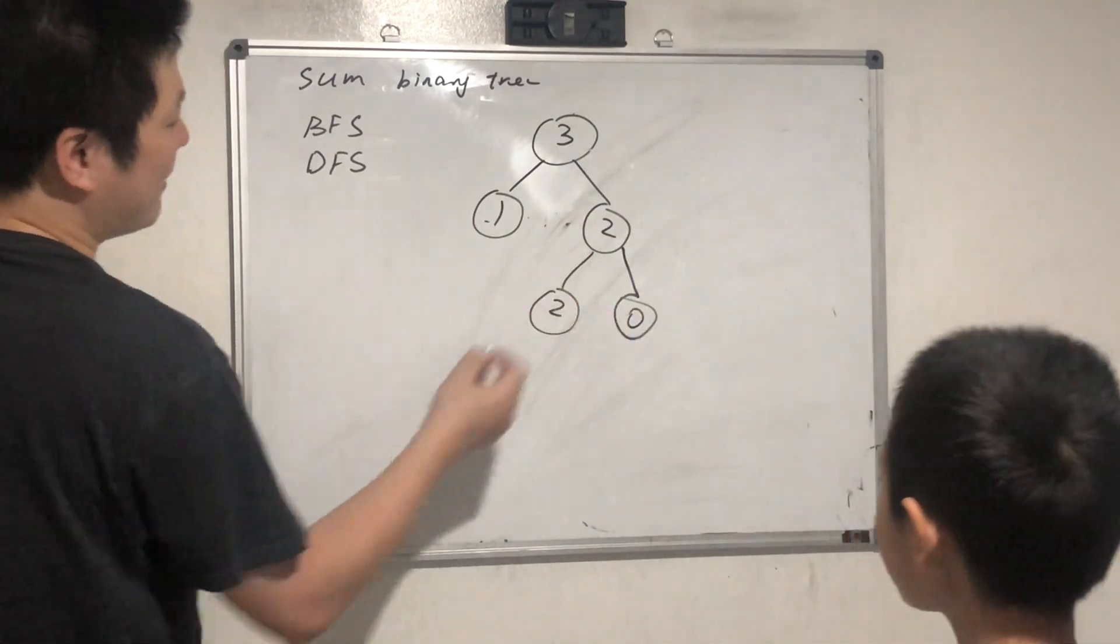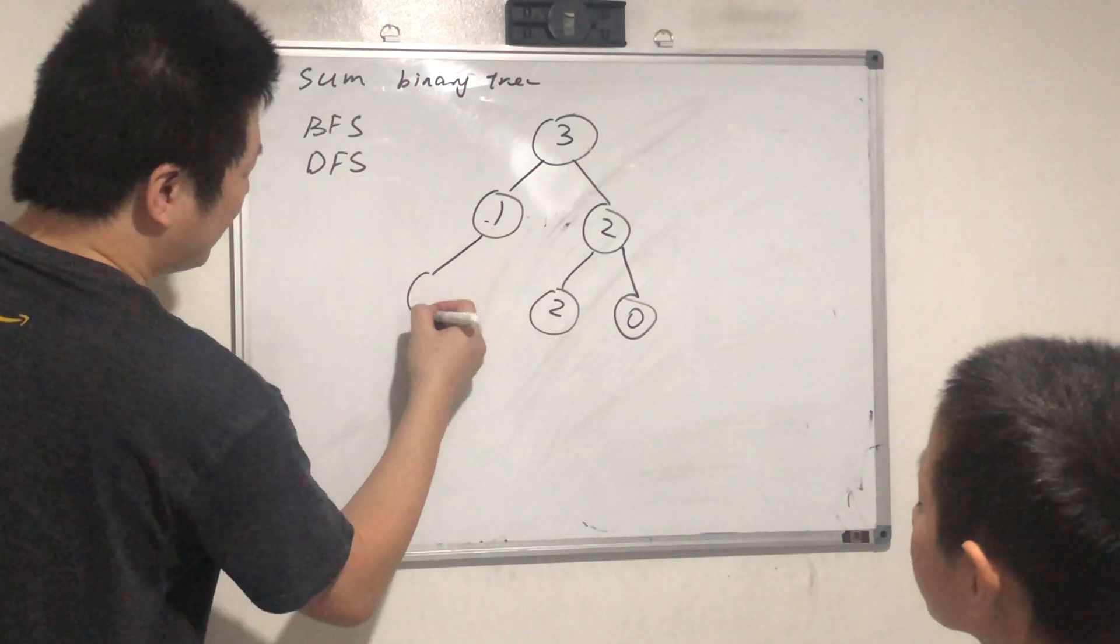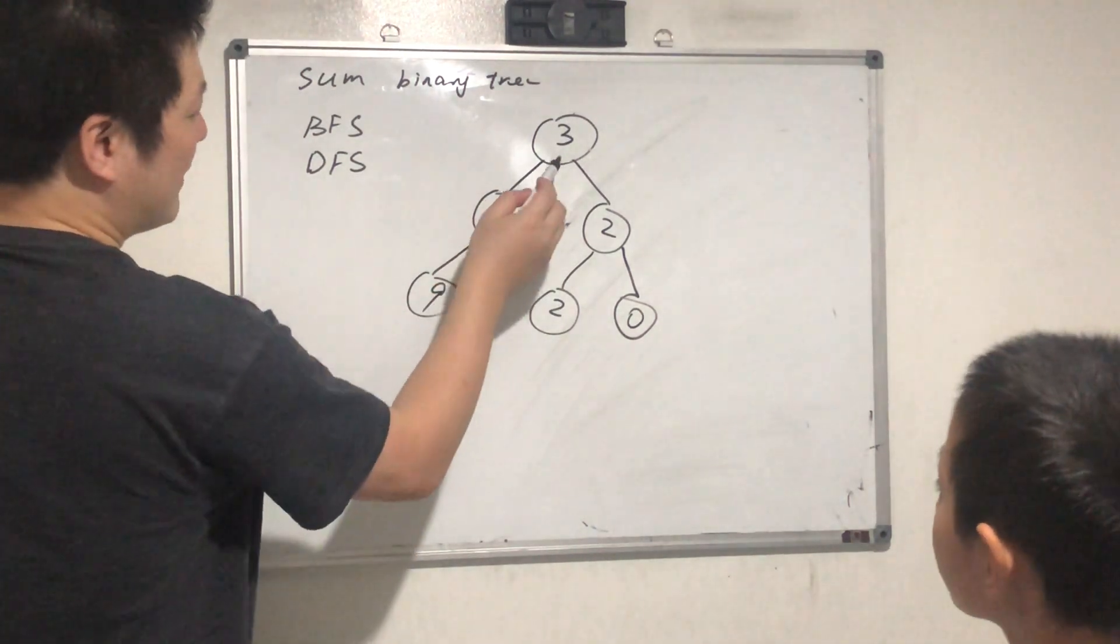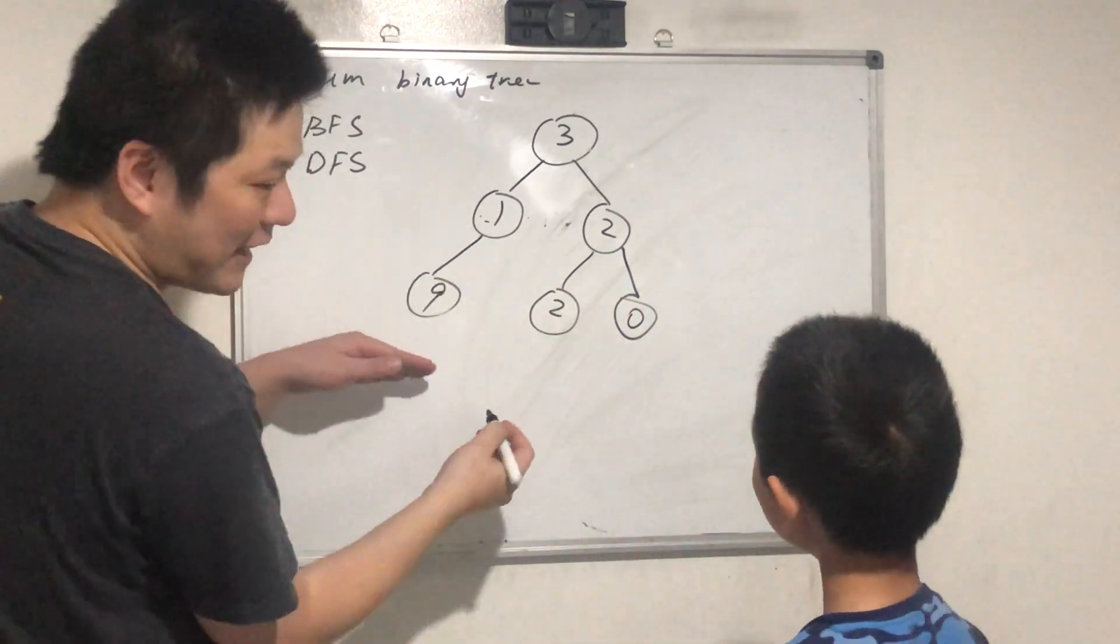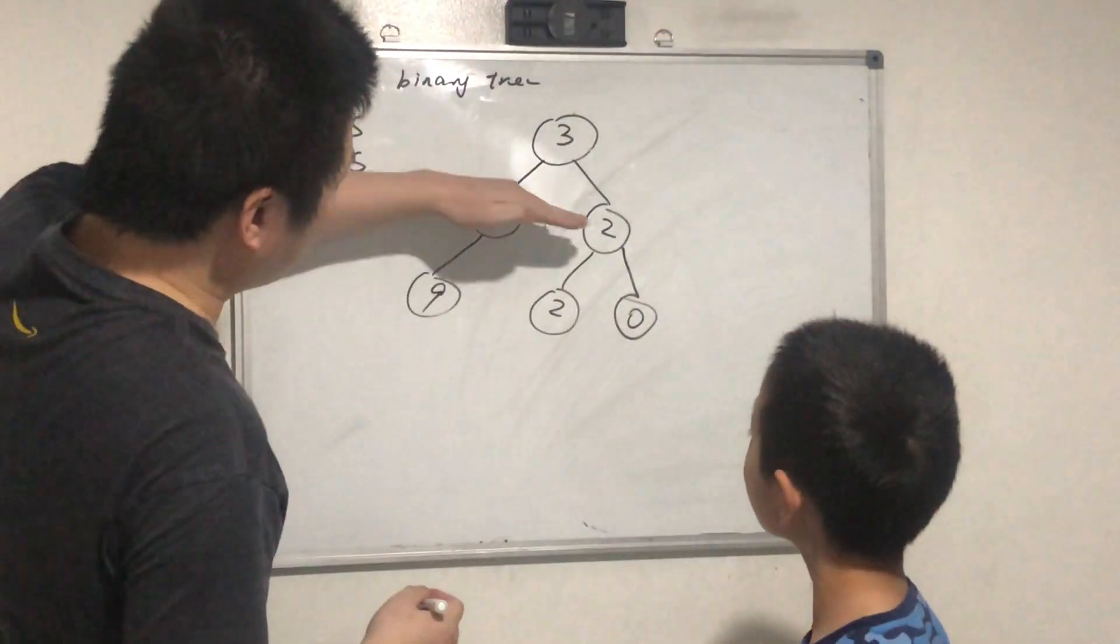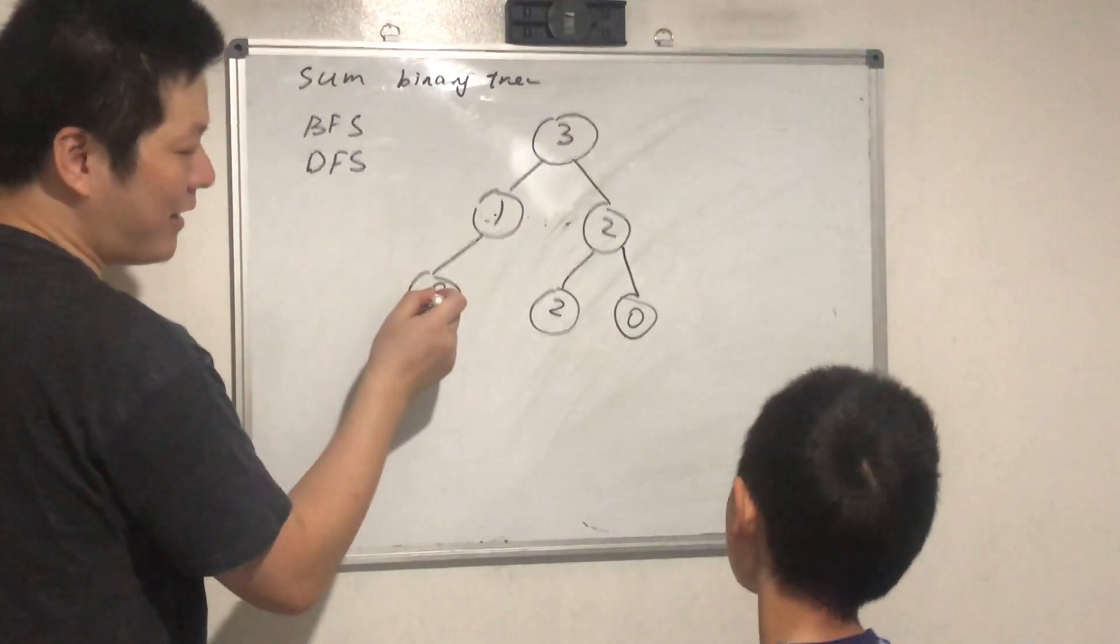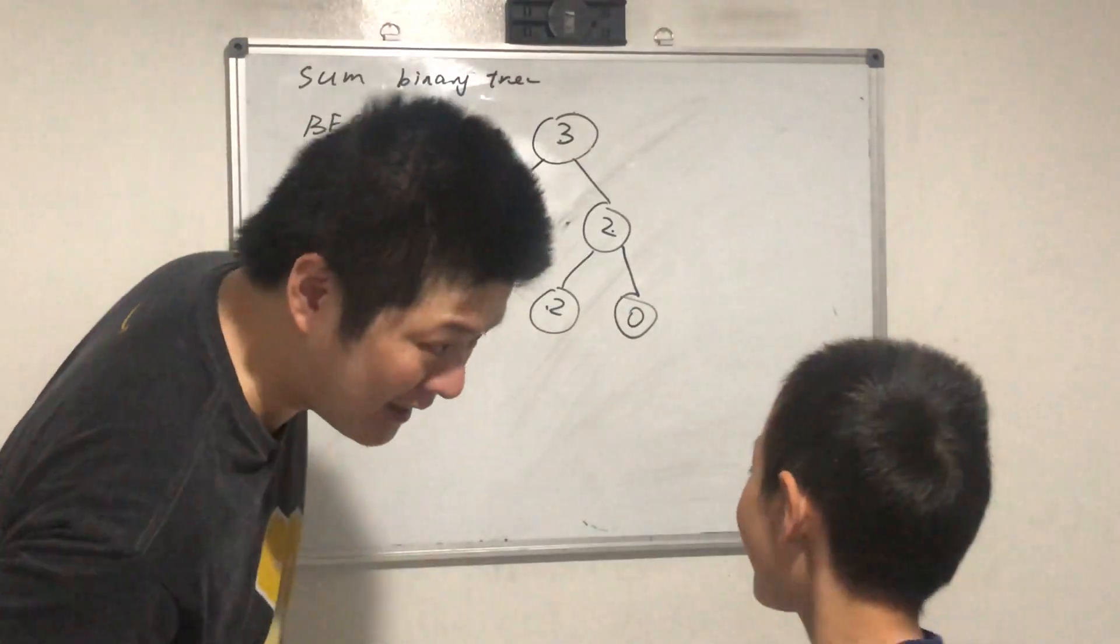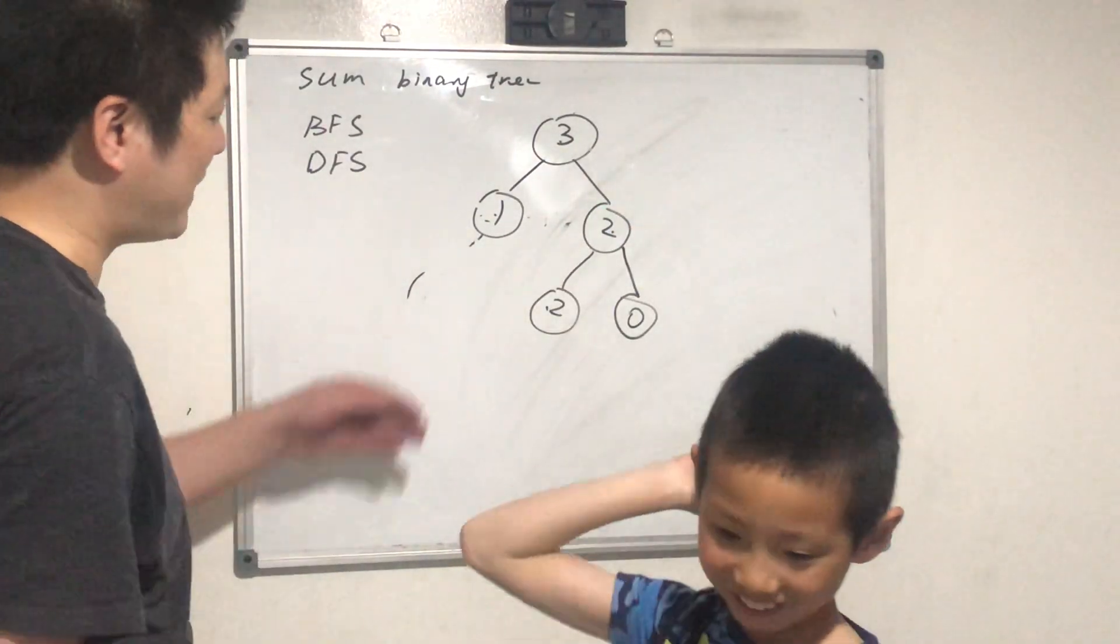Yeah, but it's different meaning. Level by level, if I put another nine, the BFS is three, one, two, nine, two, zero. But the depth-first search, the pre-order, we see three, one, nine, two, two, zero. Okay, it didn't have this one, but in this case it'd be the same.